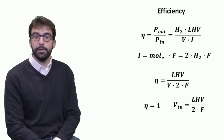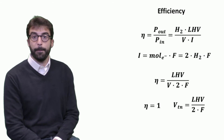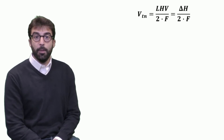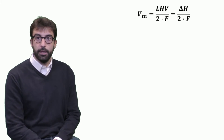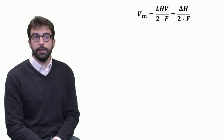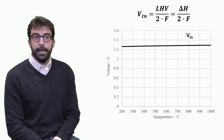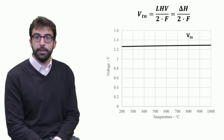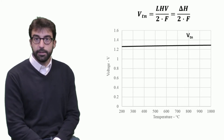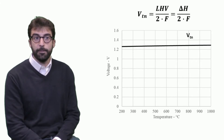At the thermoneutral voltage, the electrolyzer theoretically operates at 100% efficiency. The lower heating value is numerically equivalent to the enthalpy difference, so we can connect this equation to the variation of enthalpy as we did in the previous unit. Plotting this, we see that the thermoneutral voltage increases with increasing temperature.